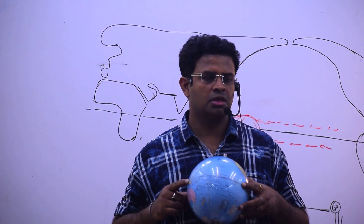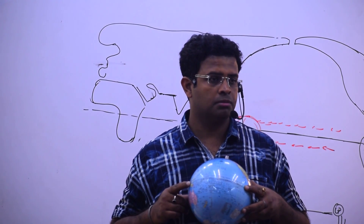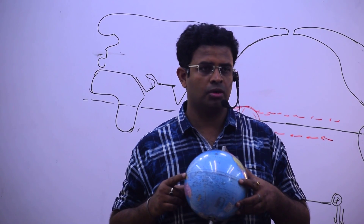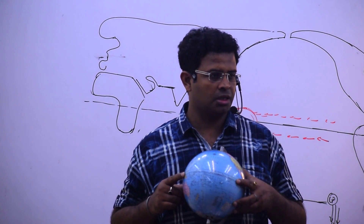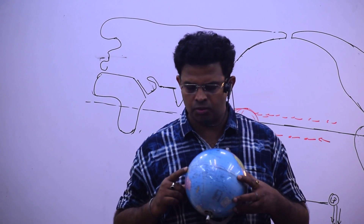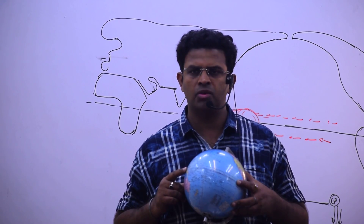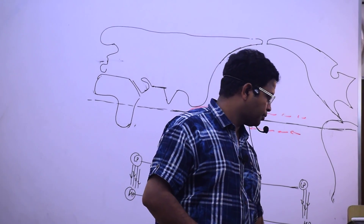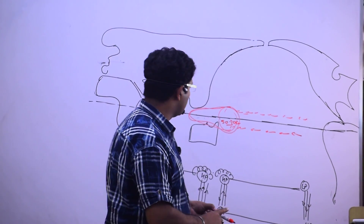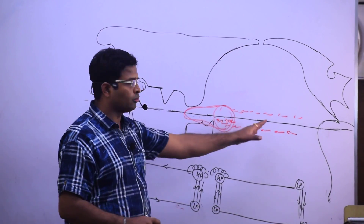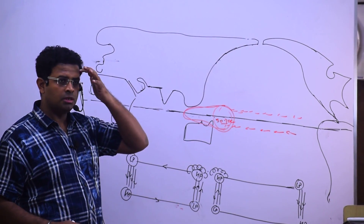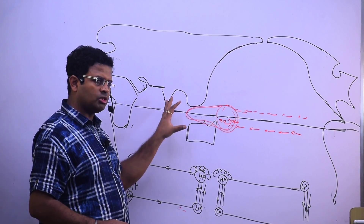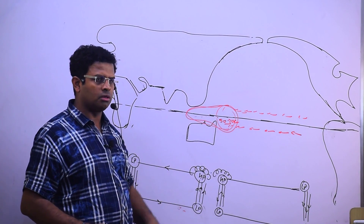So this region is very big. You can say that the circumference of the equator is 40,000 km, so it is around 17,000 to 18,000 km here. There is a large accumulation of water and the level of water — we are doing first a normal condition.